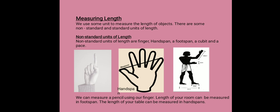Foot span: from the tip of the longest toe to the end of the heel — that is the foot span. Pace: a pace is from one foot to the other foot when we step one foot and then put the other foot — that is one pace.